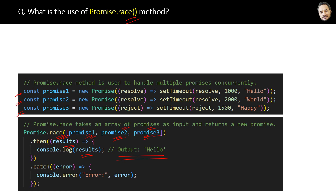For example, if promise one is resolved, then the output will be just 'hello' — no other promise result, no further execution. Similarly, if promise one is rejected, an error will be logged, and again no further execution will take place.